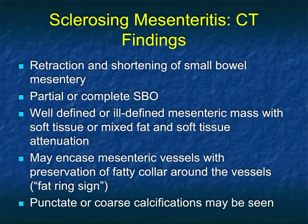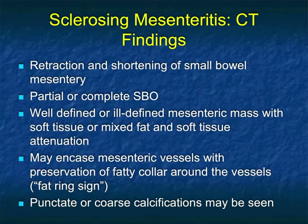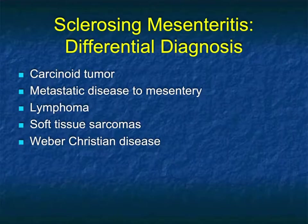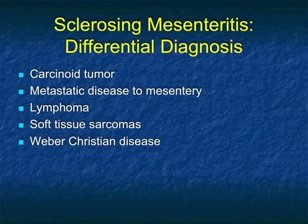In summary, sclerosing mesenteritis shows retraction and shortening of the mesentery, partial or complete small bowel obstruction, and a well- or ill-defined mesenteric mass with soft tissue or mixed fat and soft tissue attenuation. It can encase mesenteric vessels with preservation of a fatty collar — the fat ring sign — as opposed to carcinoid tumor. Punctate or coarse calcifications may be seen. The differential includes carcinoid tumor at the top, followed by metastases, lymphoma, soft tissue sarcomas, and Weber Christian disease, which is exceedingly rare.